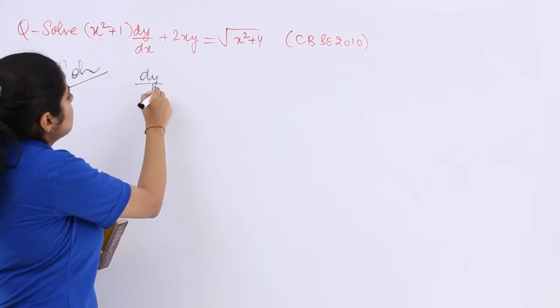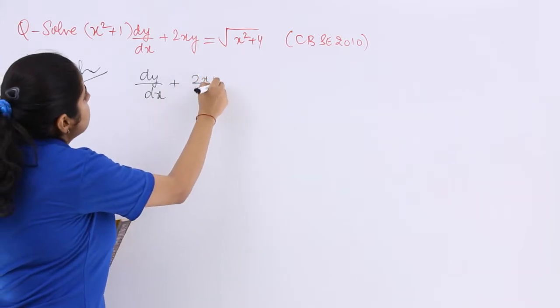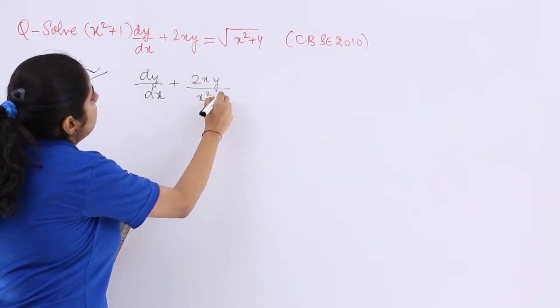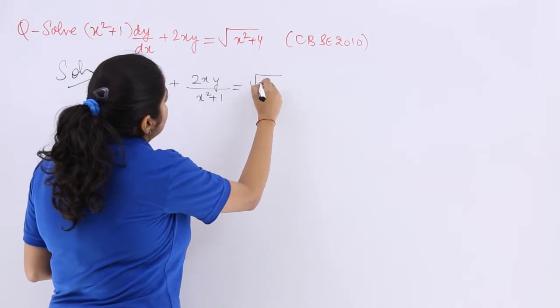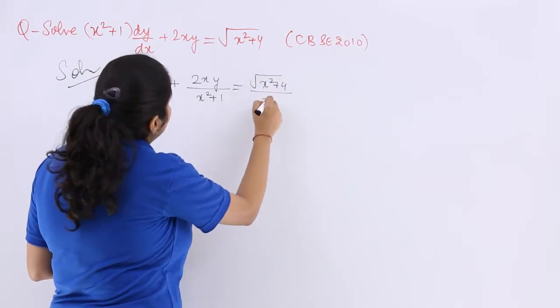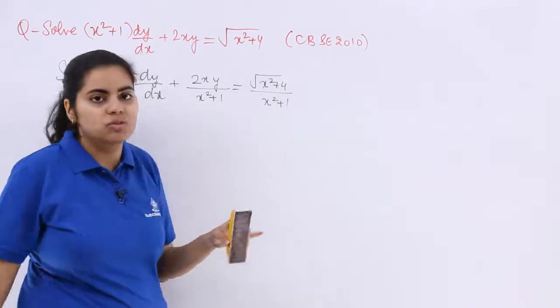So I know that dy/dx + 2xy/(x²+1) = √(x²+4)/(x²+1) should be the case.